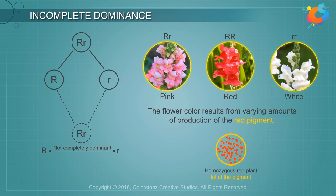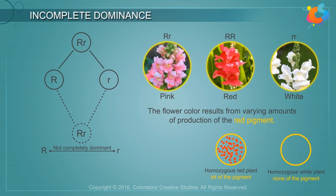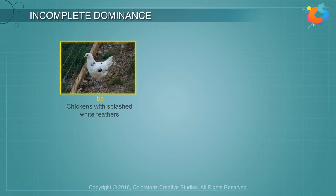The homozygous red plant (RR) produces a large amount of the red pigment. The homozygous white plant (rr) produces none of the pigment. The heterozygote (Rr) produces half as much pigment as the homozygous red plant.